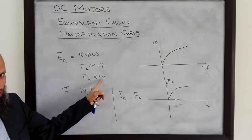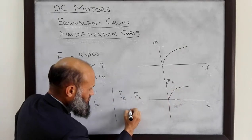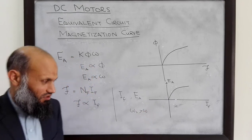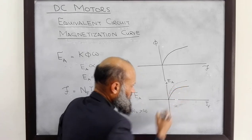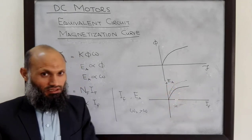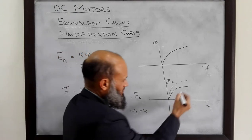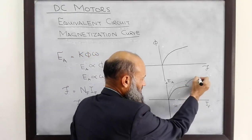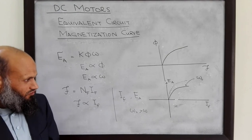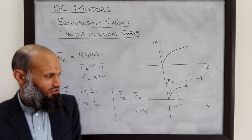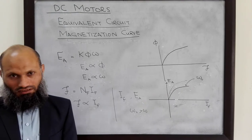For a different speed — for example, if this graph was for Ω₁ — then for another speed Ω₂ greater than Ω₁, the graph between IF and EA will simply be scaled up. Generally, they have only one plot which is for the rated speed of the motor, that is for Ω₀. This magnetization curve, which relates the field current with the generated voltage, will be useful in the analysis of DC motors, as we shall discuss in the later lectures.